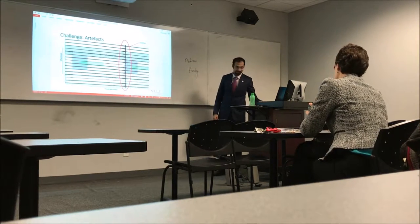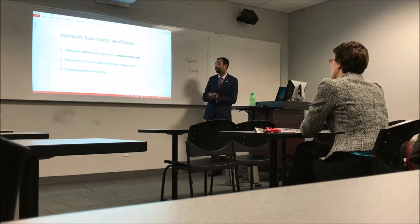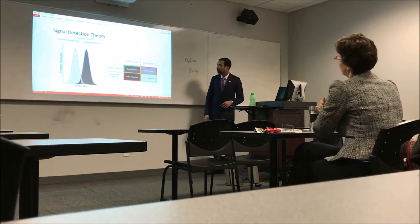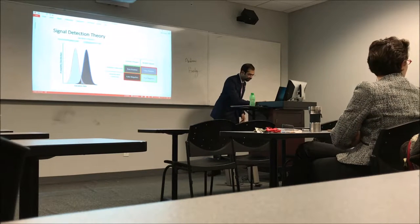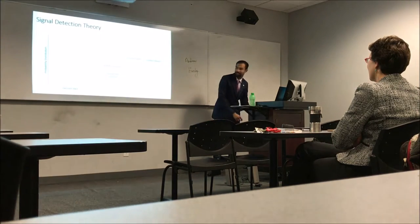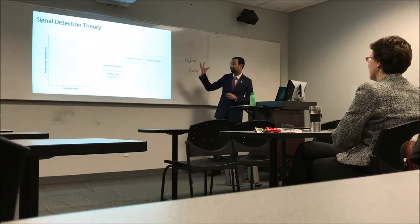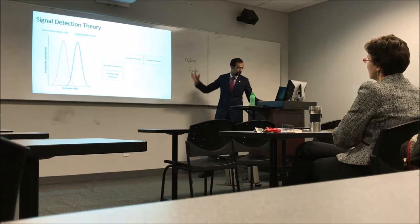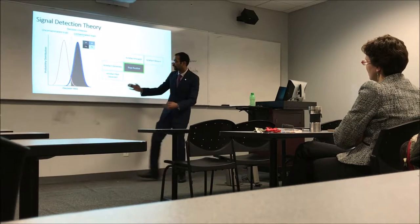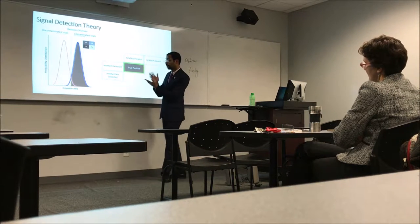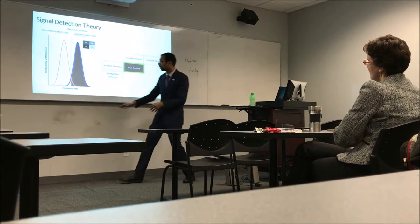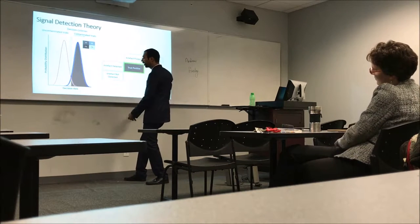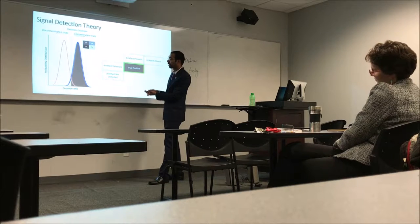These are the artifacts which I detect by visual inspection — this is the ground truth, which I use to find the accuracy of the classifier and the denoising algorithm. I put the probability distributions of contaminated and uncontaminated trials. I use a decision criteria that moves from left to right to detect whether the algorithm classifies a trial as contaminated or not. If the decision criteria is at a certain point, everything to the right is detected as a contaminated trial by my algorithm.